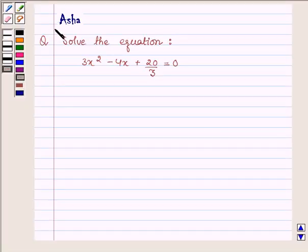Hi and welcome to the session. I am Asha and I am going to help you with the following question which says solve the equation 3x² - 4x + 20/3 = 0.